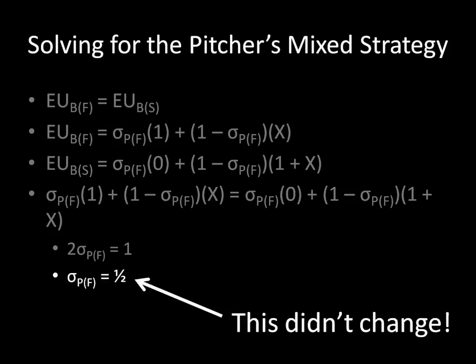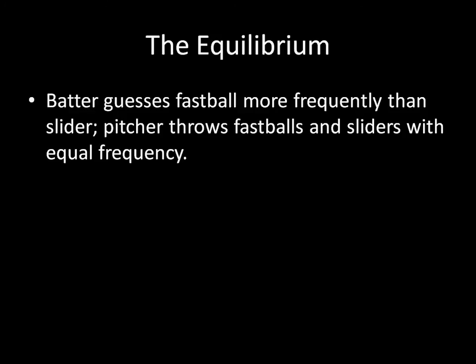Before without anyone on third base, the pitcher was throwing a fastball with probability one half. Now with a runner on third base, surprisingly, the pitcher's behavior hasn't changed — he's still throwing fastballs and sliders at the exact same frequency. In equilibrium, the batter guesses fastball more frequently than slider, and the pitcher throws fastballs and sliders with equal frequency.